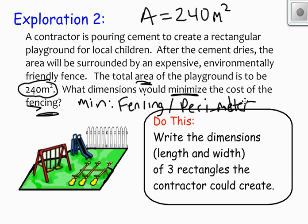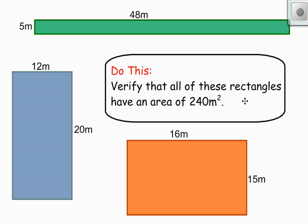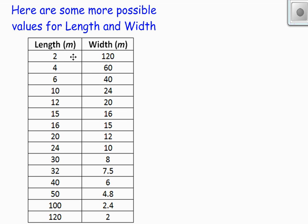So let's see what happens. Here are some rectangles that have an area of 240 meters squared. 5 times 48 is 240, 12 times 20 is 240, 16 times 15 is 240. And you can see they all have different perimeters. So again, I used the computer. I said, give me a whole bunch of rectangles that all have an area of 240 meters squared. Then I said, show me their perimeters.